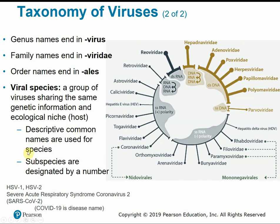For example, herpes simplex virus 1 and herpes simplex virus 2. SARS-CoV-2 stands for severe acute respiratory syndrome coronavirus 2 — 'SARS' is descriptive of the disease it causes, and this is the second strain from this coronavirus group. COVID-19 is actually the name of the disease caused by this virus, similar to how HIV is the name of the virus but it causes the disease called AIDS.